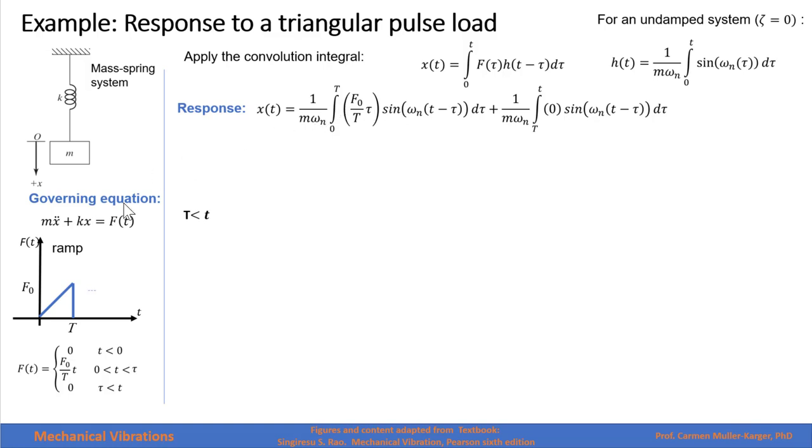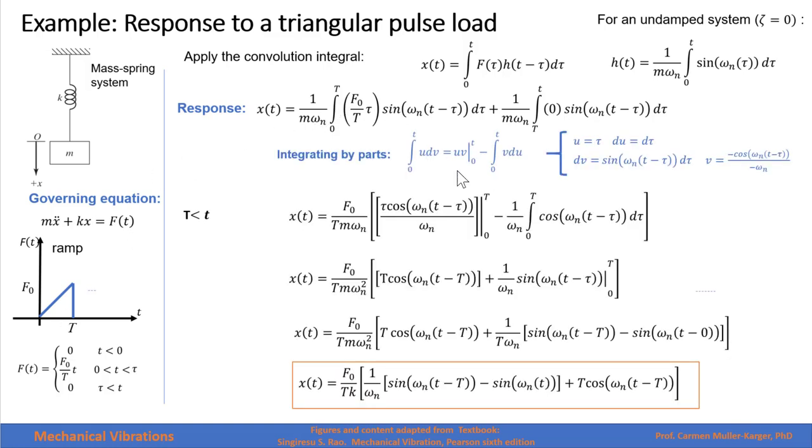Similarly, as we did before, we applied integrating by parts. And we substitute our terms u and v in our integral. And then what is different from these elements from the previous slide is my limits of integration. Here I have 0 and capital T. Therefore, when I apply my limits of integration, I get capital T here and I get t minus capital T.